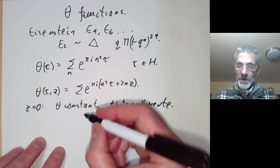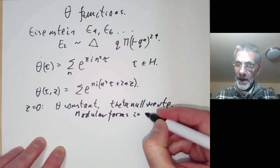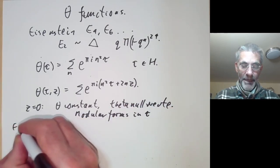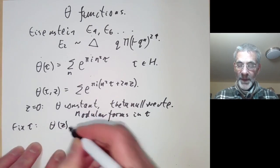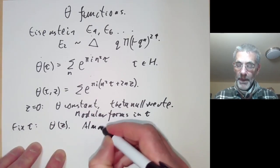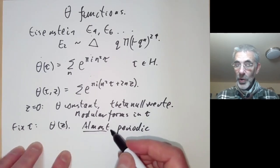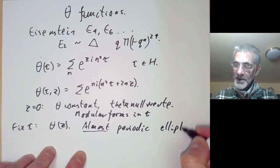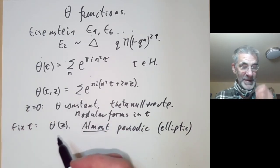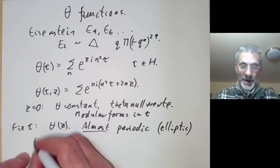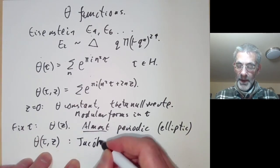When z equals zero these will turn out to be modular forms in tau. You can also fix tau and consider theta as a function of z, and then these are almost double periodic — almost elliptic functions but not quite, because adding tau to z is not quite invariant. Finally, you can consider theta as a function of both tau and z, and these are then called Jacobi forms.